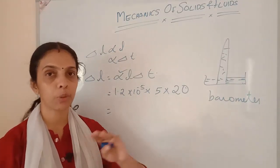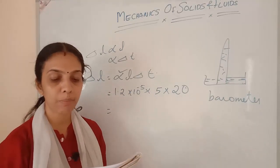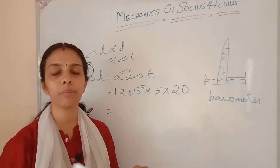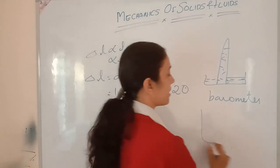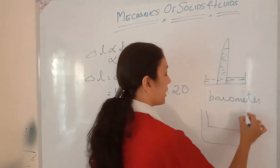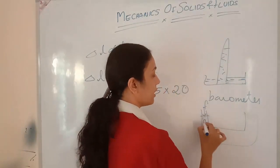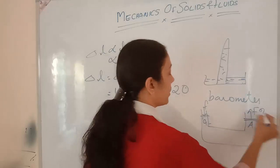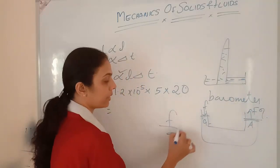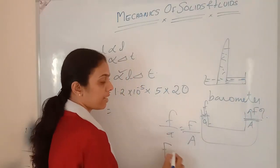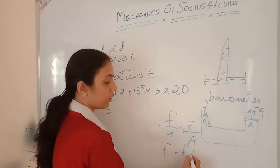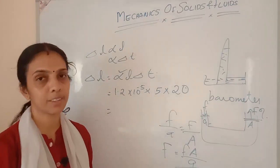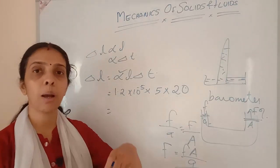State Pascal's law for transmission of fluid pressure: pressure will be equally distributed in all directions. The hydraulic lift works on Pascal's law. A small force f acts on a small area a, and a larger area A is on the other side. So f/a = F/A, which gives F = f × A/a. Since A is large and a is small, F will be large. This is the hydraulic lift based on Pascal's law.